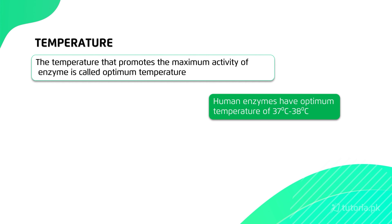Now let's talk about factors that affect enzymatic activity. Always remember that any reaction depends on certain conditions — enzymes too depend on certain conditions. For example, temperature: every enzyme works at a specific temperature range, which we call the optimum temperature. For example, all enzymes inside the human body perform their reactions at 37 to 38 degrees. Then there is pH — every enzyme works according to a specific pH range. For example, the pepsin enzyme present in your stomach works at an acidic pH.